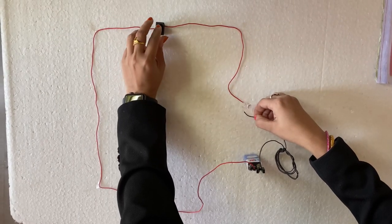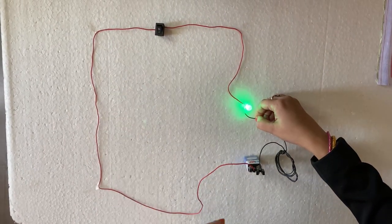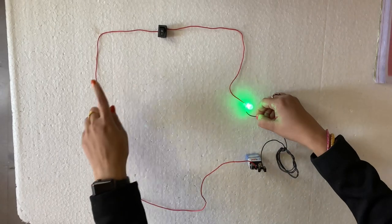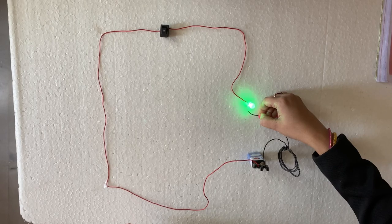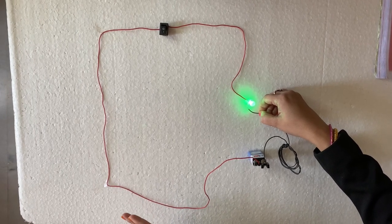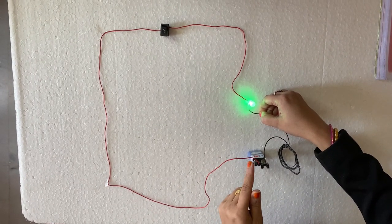You can see now the circuit is complete and this is example of closed circuit, complete circuit, and here the bulb is glowing.